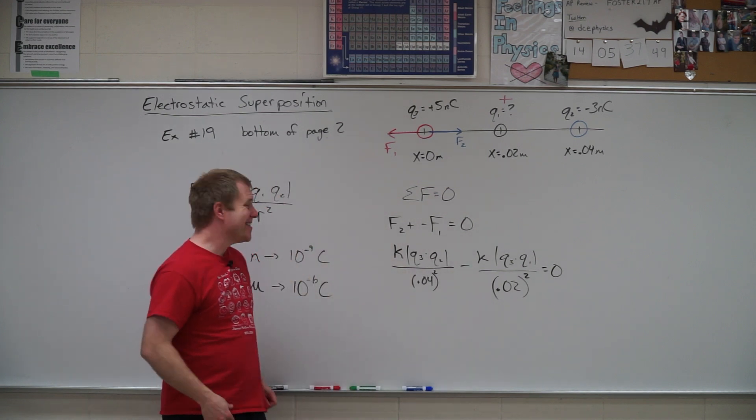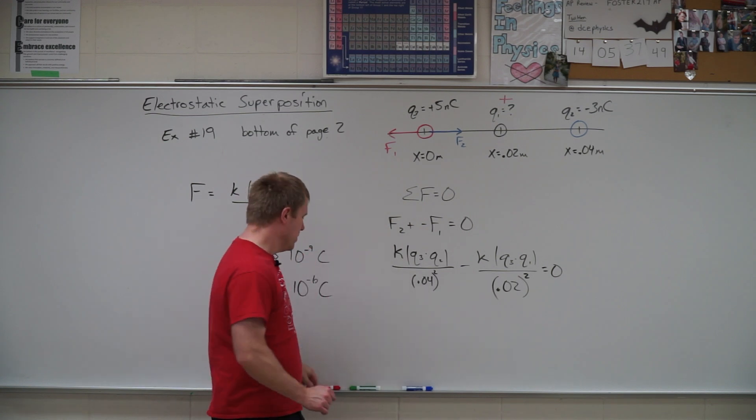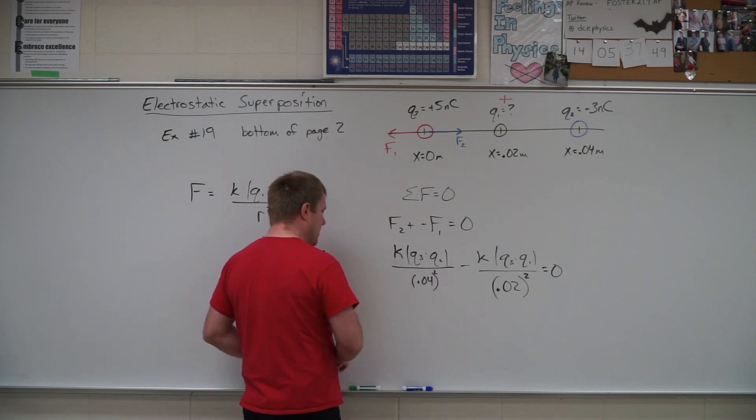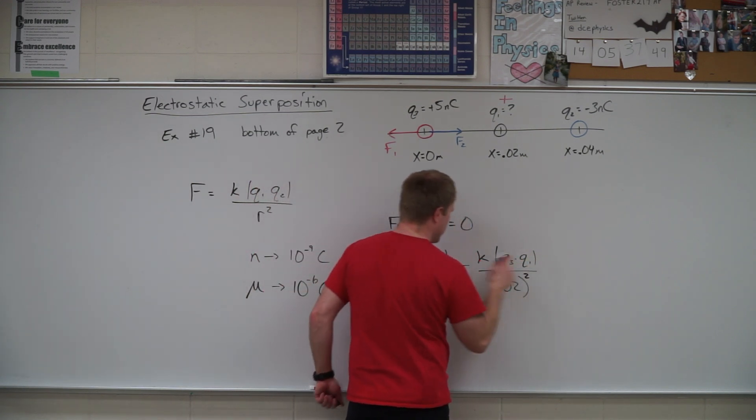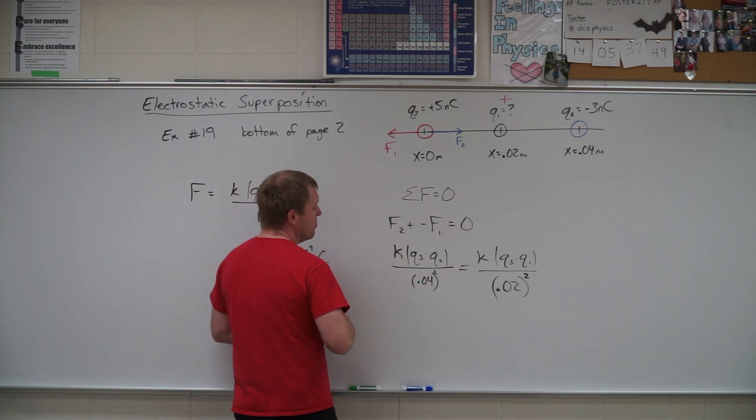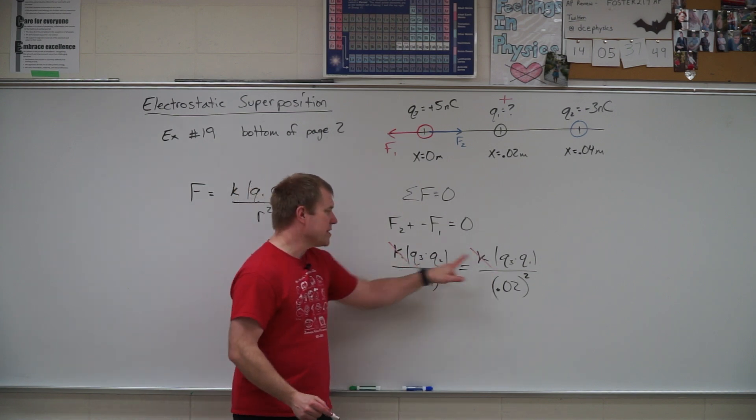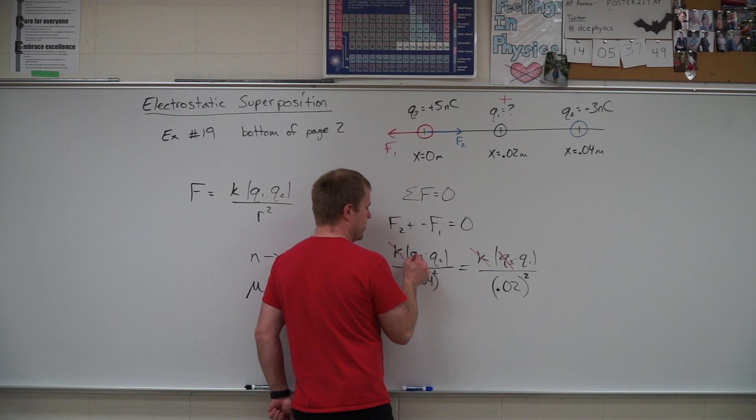So now I'm going to go ahead and solve for q1. That's my only unknown here. So what I can do is I can move all this stuff to the other side and set them equal to one another. And then I get to cross some stuff out. So Coulomb's constant, gone. The q3 is on both sides, so that is also gone.